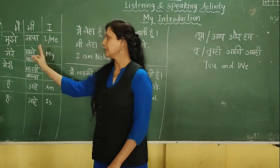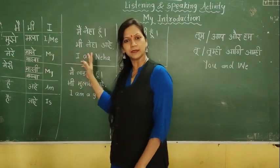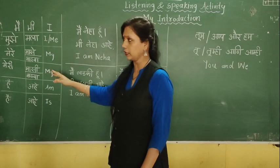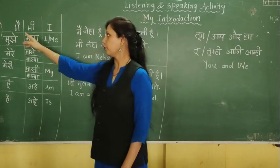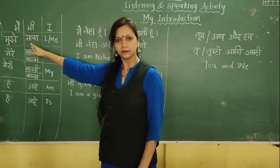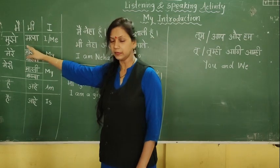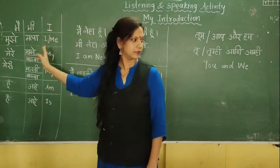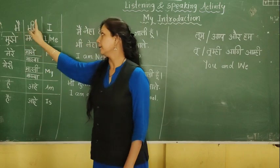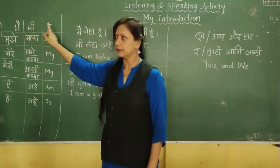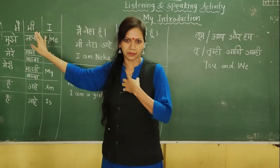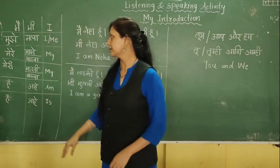I am here in three languages. So, in Hindi it is 'मैं', in Marathi it is 'मी', and in English it is 'I'. Okay? So, मैं, मी, and I. This is how 'I' — I means what 'I am' in English.